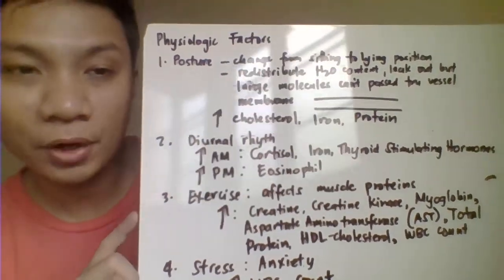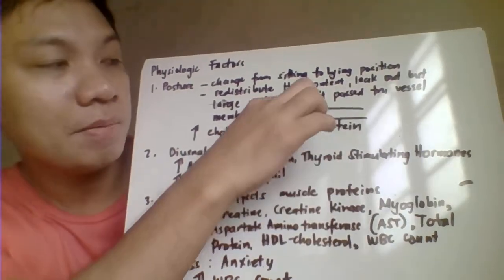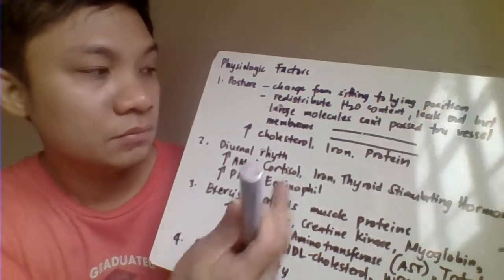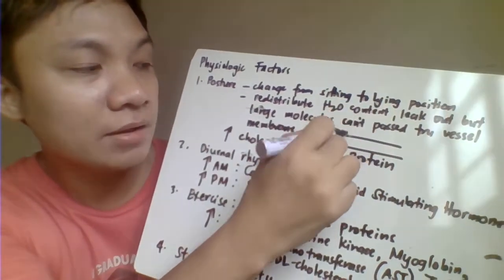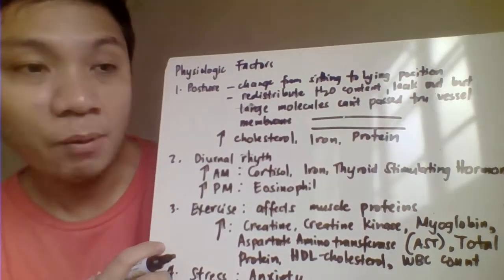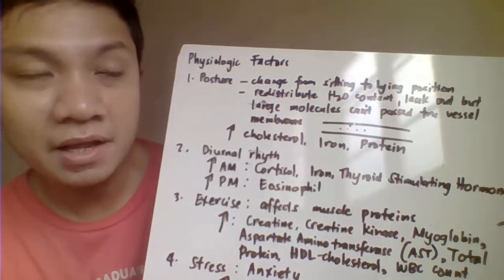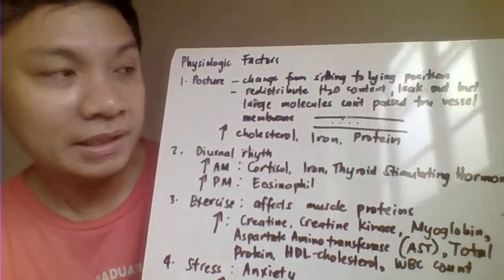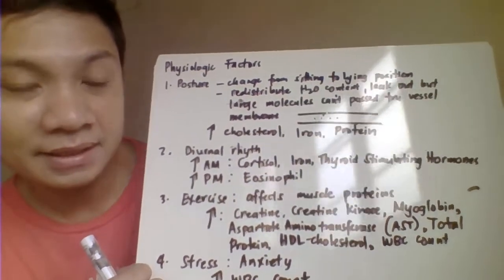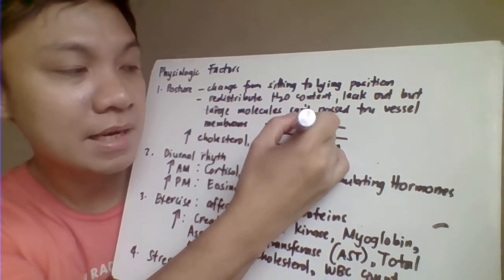What's going to happen with that? The water within our blood vessels tries to redistribute, such that water can leak out through the blood vessel wall or the blood vessel membrane. However, large molecular weight substances cannot pass through, and therefore they will be concentrated within your blood vessels.